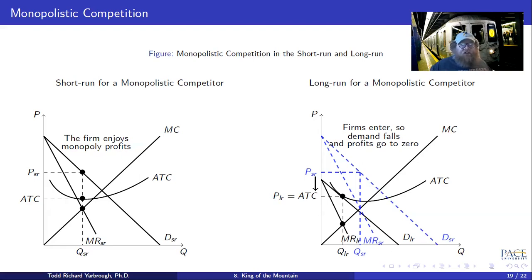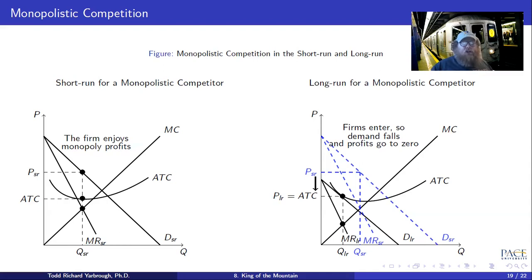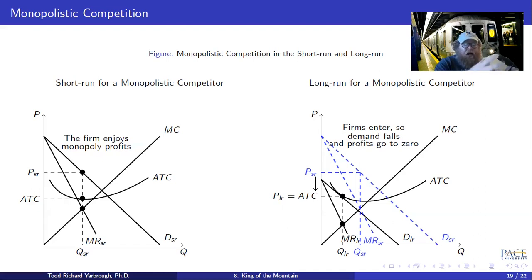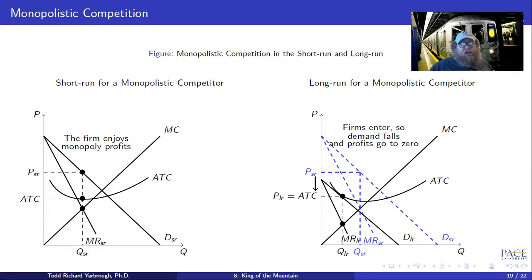The big takeaway with monopolistic competition is that firms can sometimes earn short-run profits, even in competitive markets, by differentiating their products — creating a new product or a better version of an existing one. However, because these are still competitive markets, over time we expect that firm to lose that market power. Under monopolistic competition, you start out with deadweight loss and monopoly power, but over time those markets become not only competitive but also efficient.